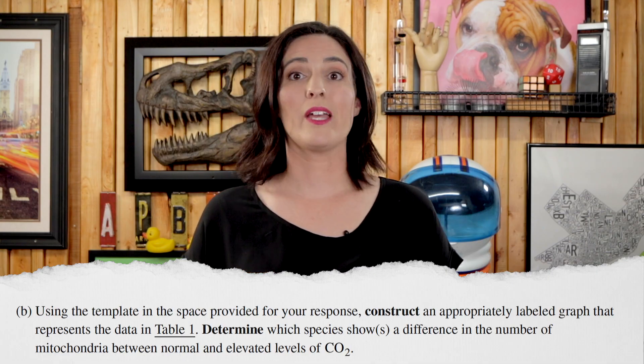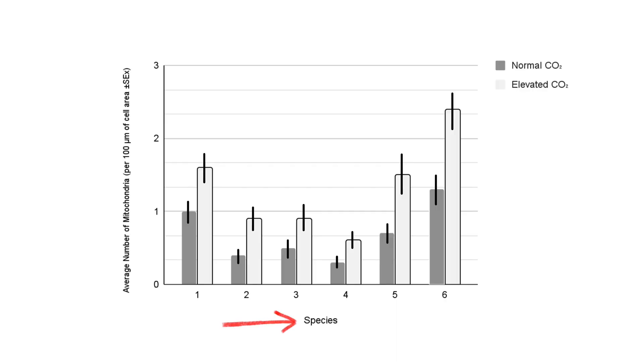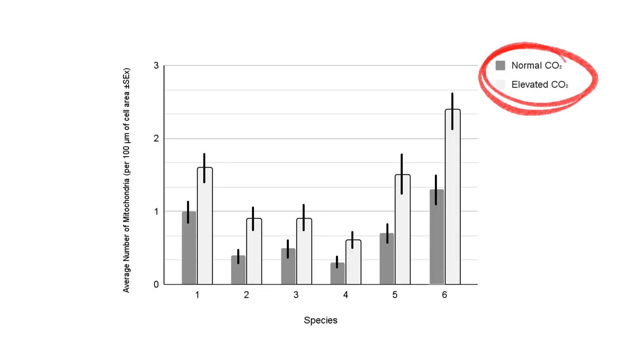Part B starts with graphing for three points. One point for axis scaling — you should have species on the X-axis, one to six, and average number of mitochondria per 100 micrometers squared of cell area with plus or minus two times standard error of the mean on the Y-axis, ranging from zero to three. One point for a correctly plotted bar graph that distinguishes between normal and elevated CO2 levels with a key. And one point for correctly plotted error bars. Part B concludes with stating that all of the species showed statistically more mitochondria at elevated CO2 levels, since none of the error bars overlapped.